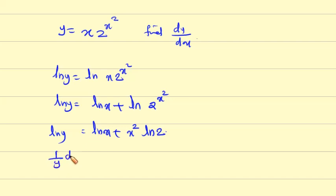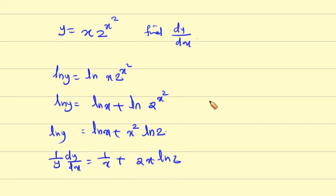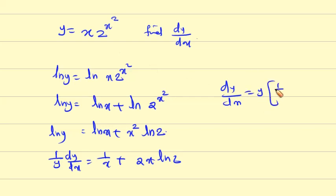Differentiating both sides: 1 by y, dy by dx equals 1 by x plus ln 2 into 2x. Therefore dy by dx equals y into 1 by x plus 2x ln 2, where y equals x into 2 raise to x square.